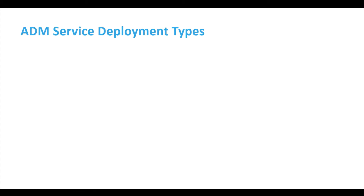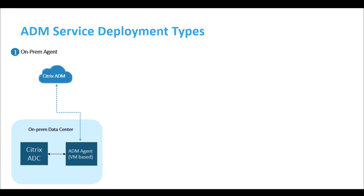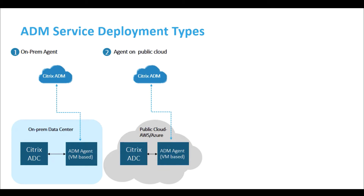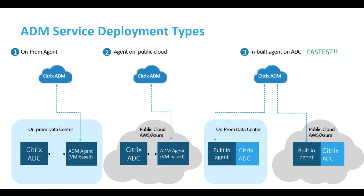ADM Service can be configured to discover ADC instances using an agent. The agent can be installed in three different ways: install an agent on-prem on any supported hypervisor on your private data center, install an agent on public clouds like AWS and Azure, or use the built-in agent on ADC. This is the fastest and easiest method to connect the ADM Service.